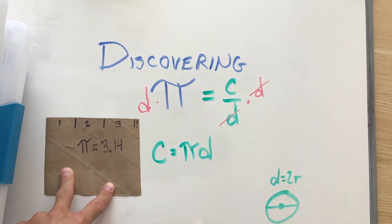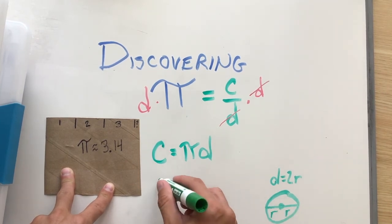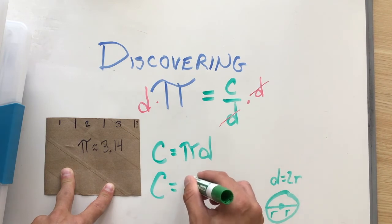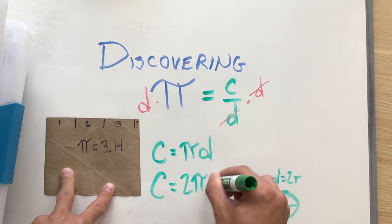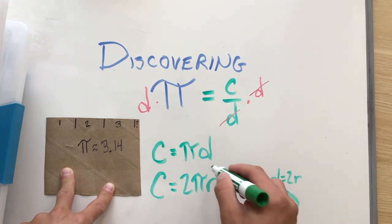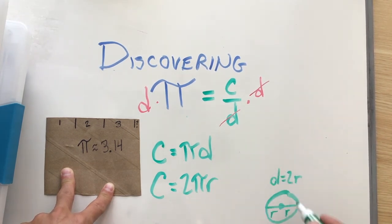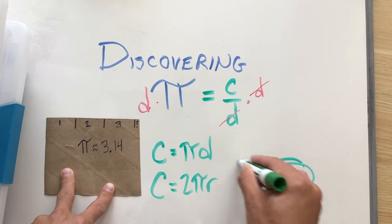Circumference is the same as pi times the diameter. But we also know that a diameter is made up of two radiuses. So we could also use the formula circumference equals 2πr by substituting in 2r for d.